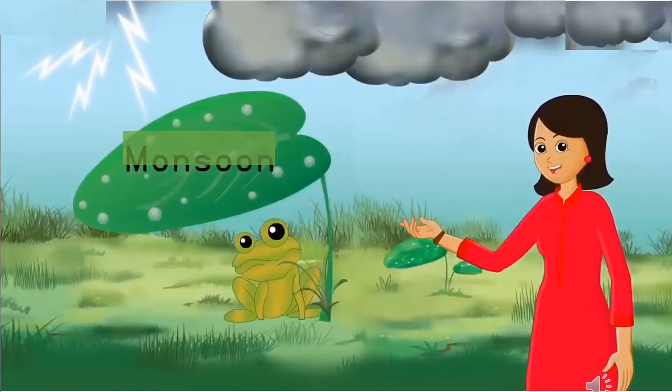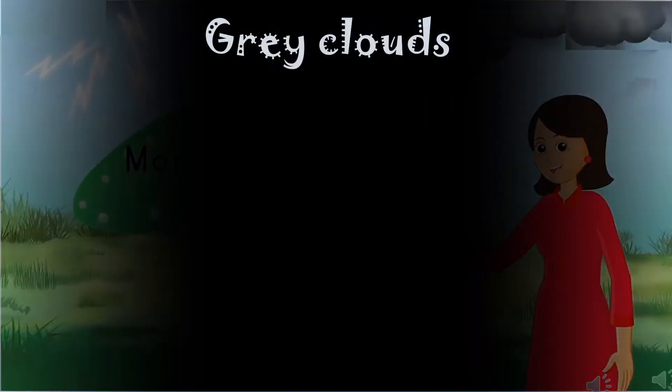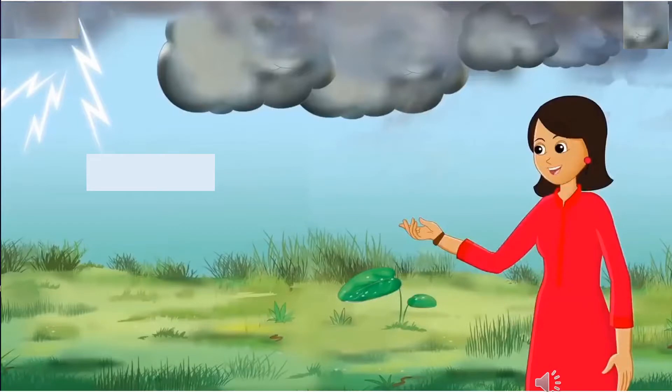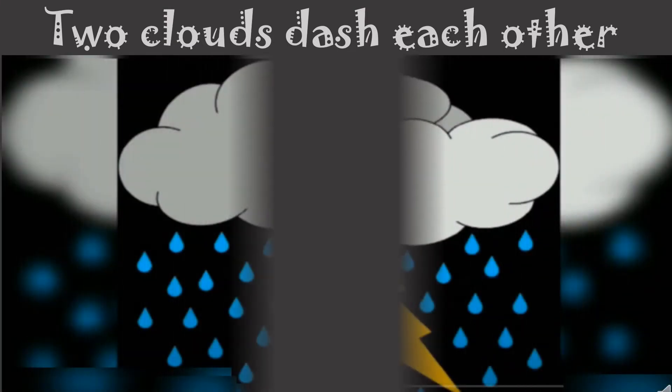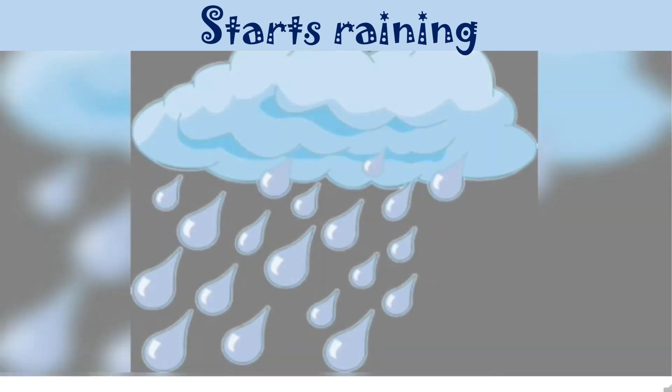Rainy season is also known as monsoon season. During rainy season clouds become grey in colour. We hear thunder sound and see lightning in the sky. Then two clouds dash each other and it starts raining.